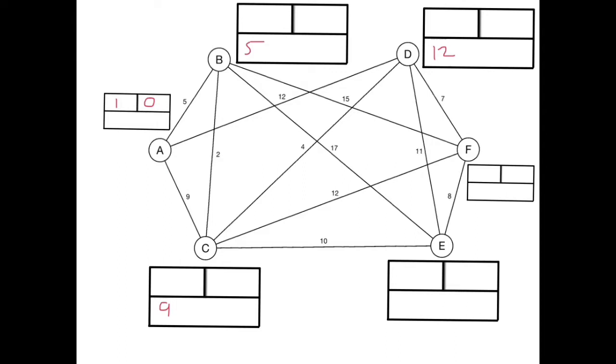Looking at each of the vertices that have got a temporary label B, C and D, B has got the lowest temporary label.